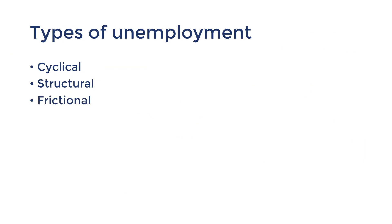Frictional unemployment is made up of people who are moving between a finished job and a new one. This is caused by the search times needed for workers to find new jobs. It's considered inevitable because even in a growing and stable economy, an imperfect flow of information exists. An example would be an actress who has just finished filming and is looking for her next job, or a student who's just started job seeking after graduating.